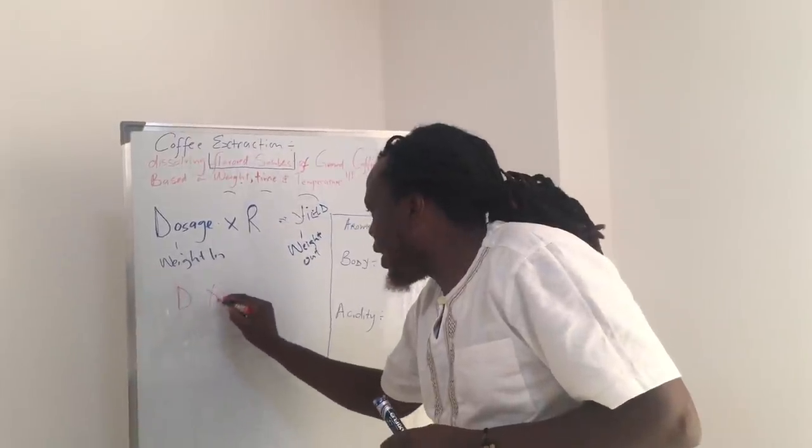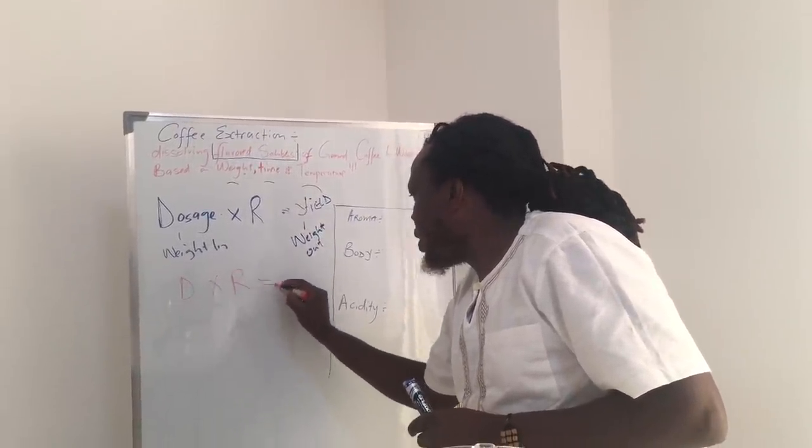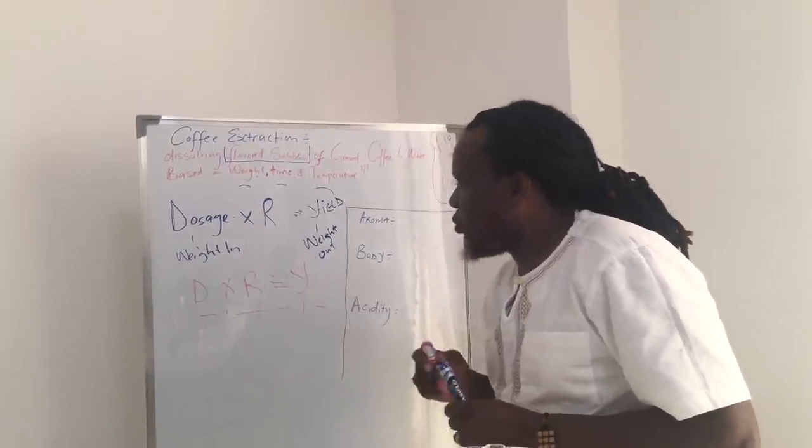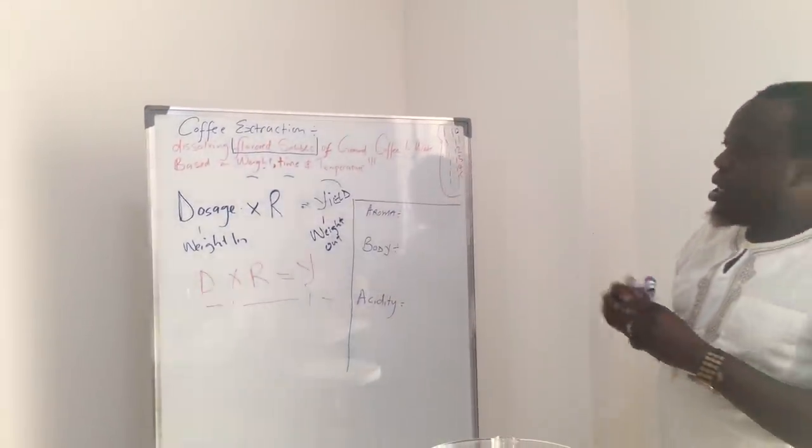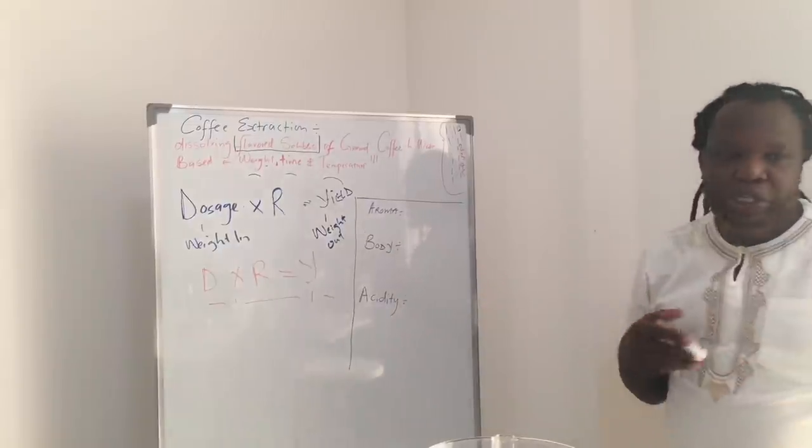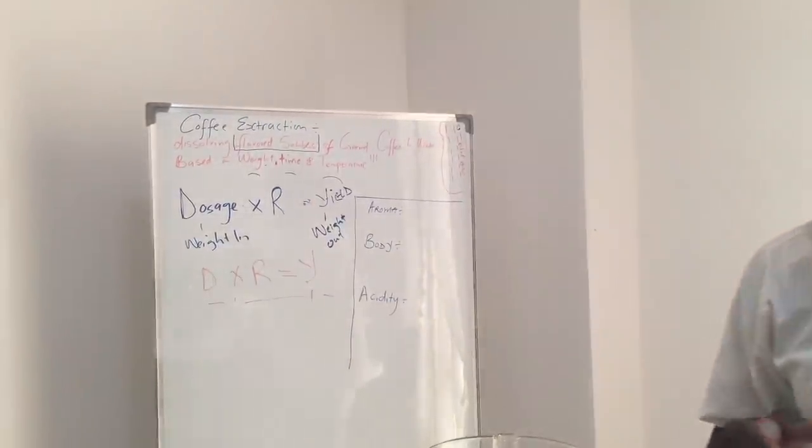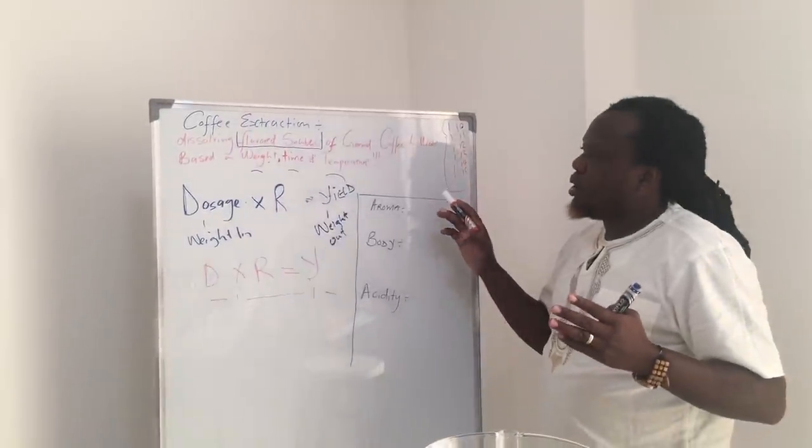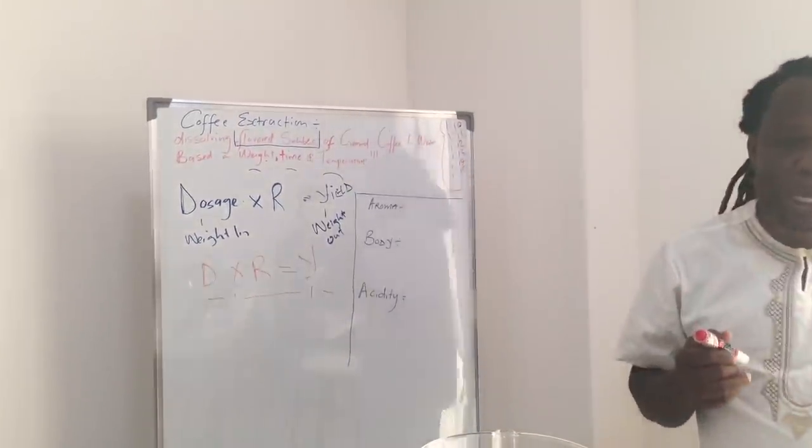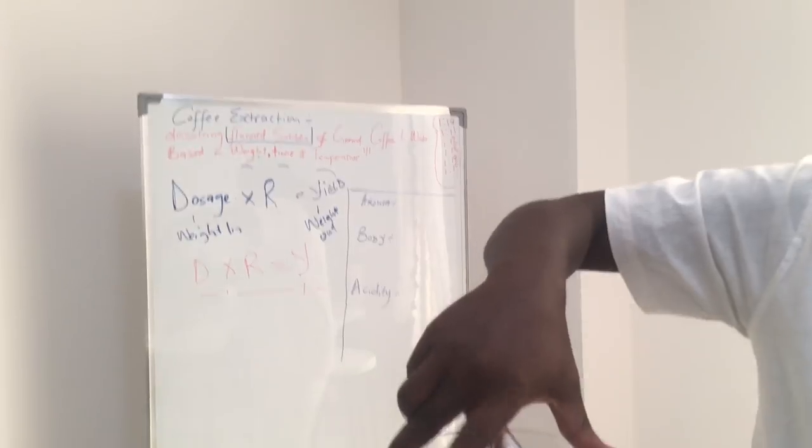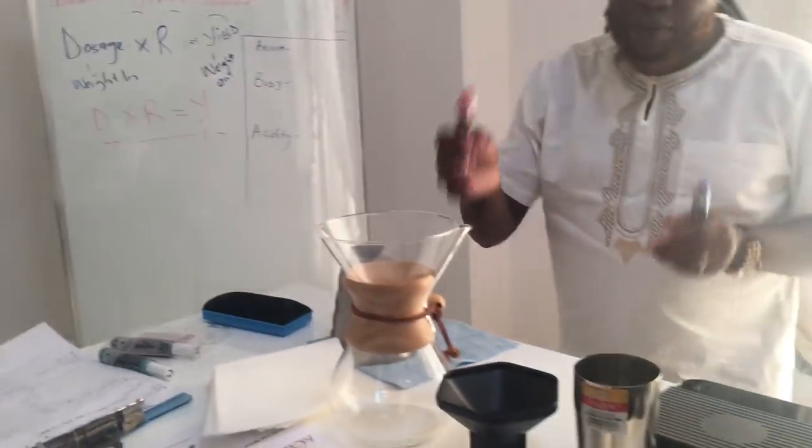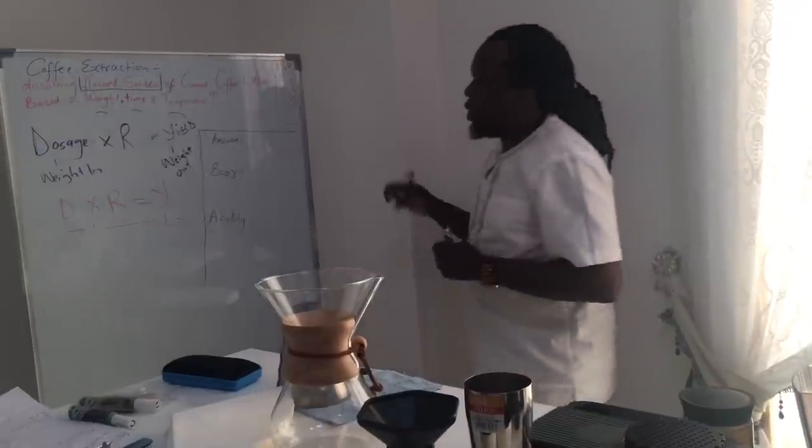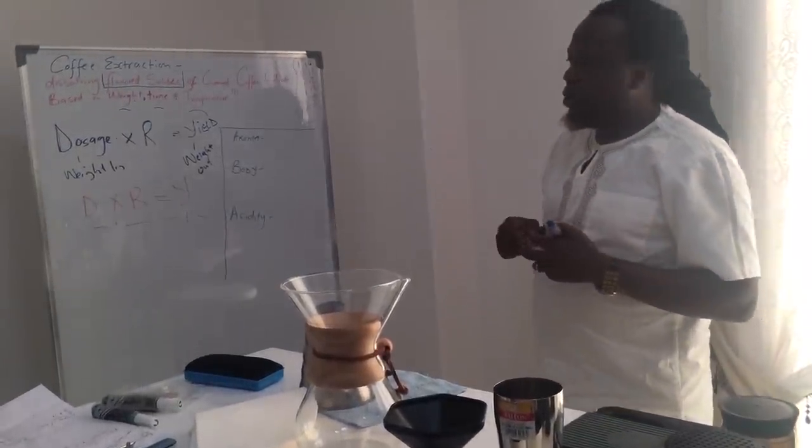So we're having a formula, which says, dosage multiplied by the ratio is equal to yield. So now, if we have this formula, now we are ready to go. So each and every way or either way you want to brew, consider that. So we do a small exercise to illustrate and demonstrate one method, maybe a Chemex at first, and pick up one of the ratios and pick up a dosage.